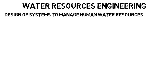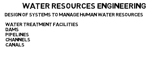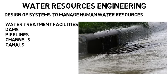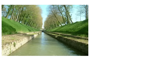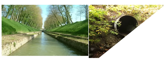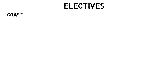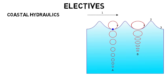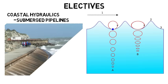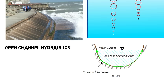Water resources engineering is about the design of systems to manage human water resources. They could work on a water treatment facility, designing dams, pipelines, channels, canals, and so on. Maybe you have to design a storm drain system in the event of a large storm — where is all the water going to go and how will you get it to the ocean efficiently? Or you could design a canal, which is an artificial waterway to transport water for irrigation or for ships and boats. Or design a culvert that will allow water to flow under a road or trail. Elective classes could include coastal hydraulics — ocean wave propagation, submerged pipelines, sea walls — or open channel hydraulics, which is about fluid flow in an open channel as opposed to a closed channel or pipeline.